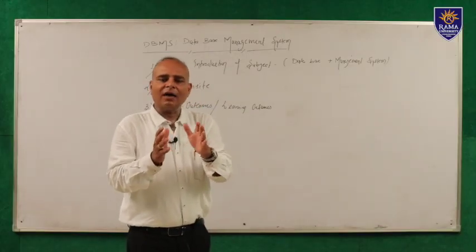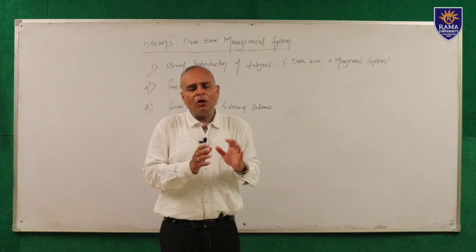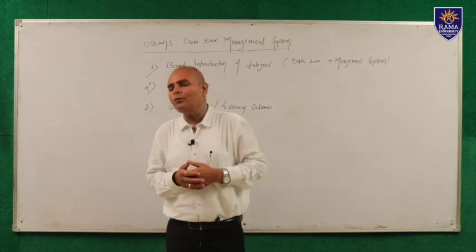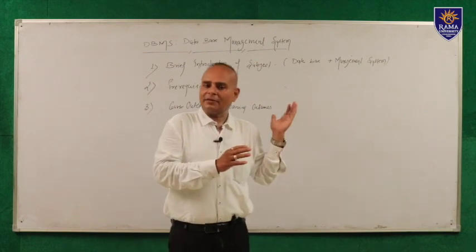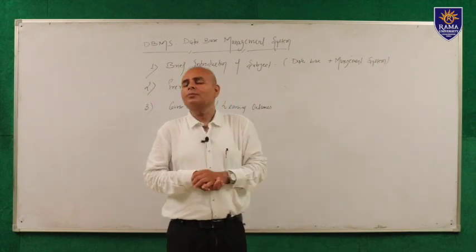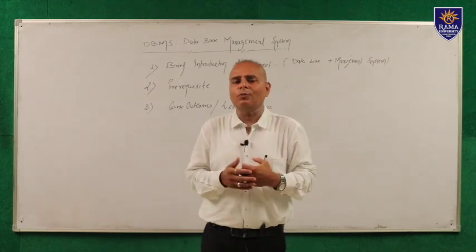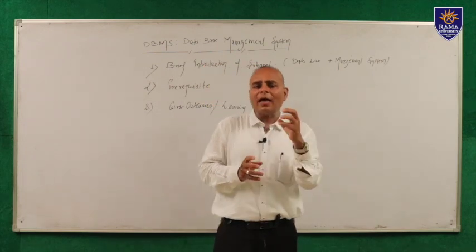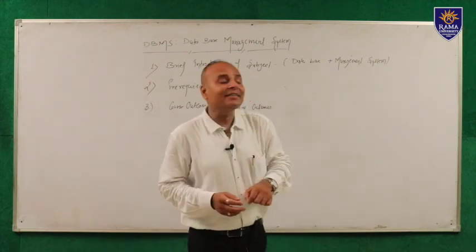The Database Management System is a collection of two things: the first is the database, and the second is the management system. The database provides only the means to store data — it does not provide any facility or support to the end user to access desired information. For retrieving desired information, we have a management system integrated with the database. The management system provides a number of tools, queries, and processes to retrieve information. Suppose we have a database of students in a university and we want to access how many students are enrolled in B.Tech Computer Science in session 2021 — it is very easy using the management system deeply integrated with the database.